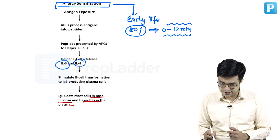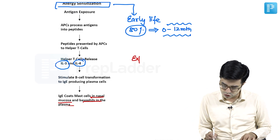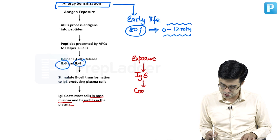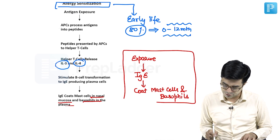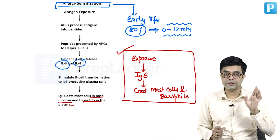So what is allergic sensitization in two words? It is the initial first exposure to allergen which leads to production of IgE antibodies, and these antibodies coat the mast cells and basophils. This is the summary of what you need to remember — this is sensitization.